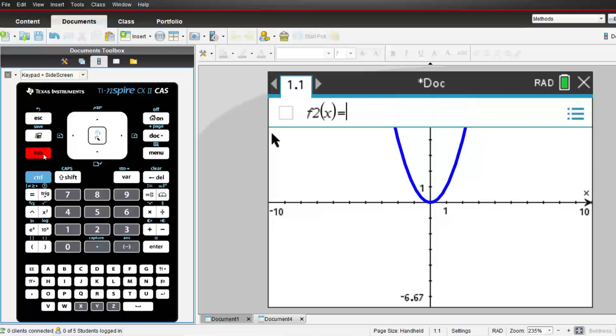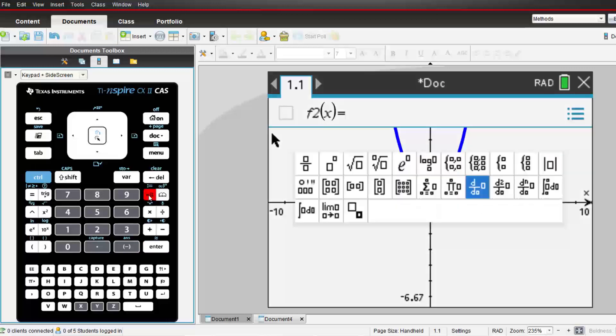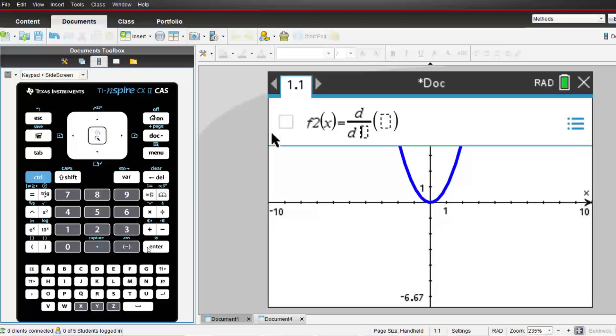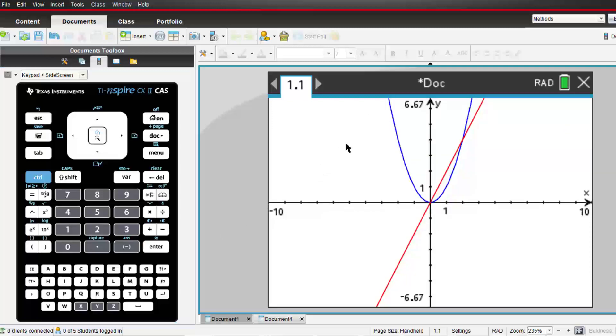Now we're ready to draw the derivative of this function. In f2, I'll select the derivative template. We are finding the rate at which the function in f1 is changing with respect to x. And there's the graph of the derivative.